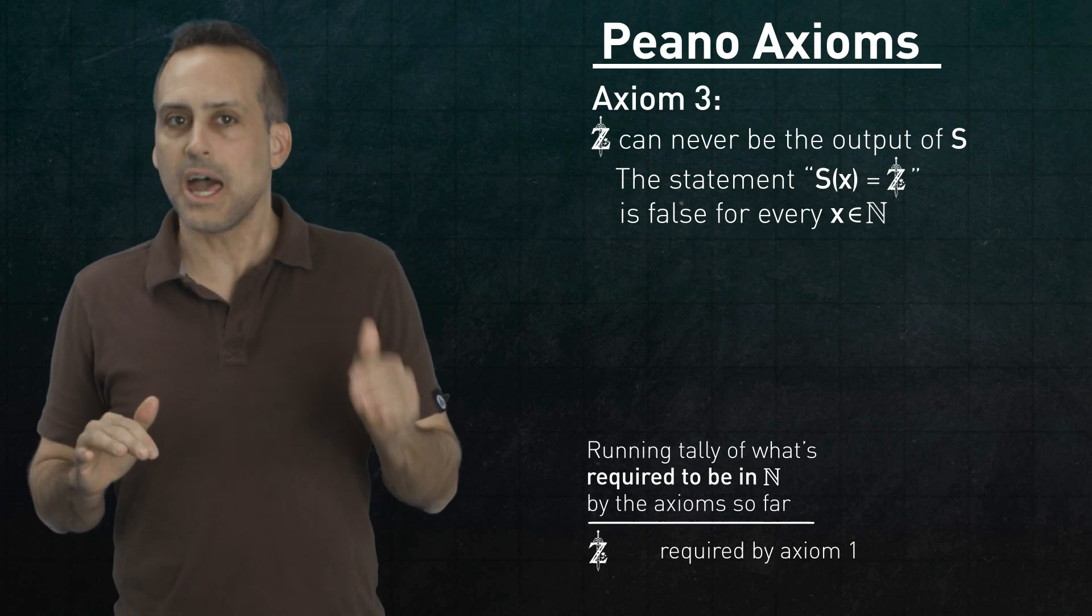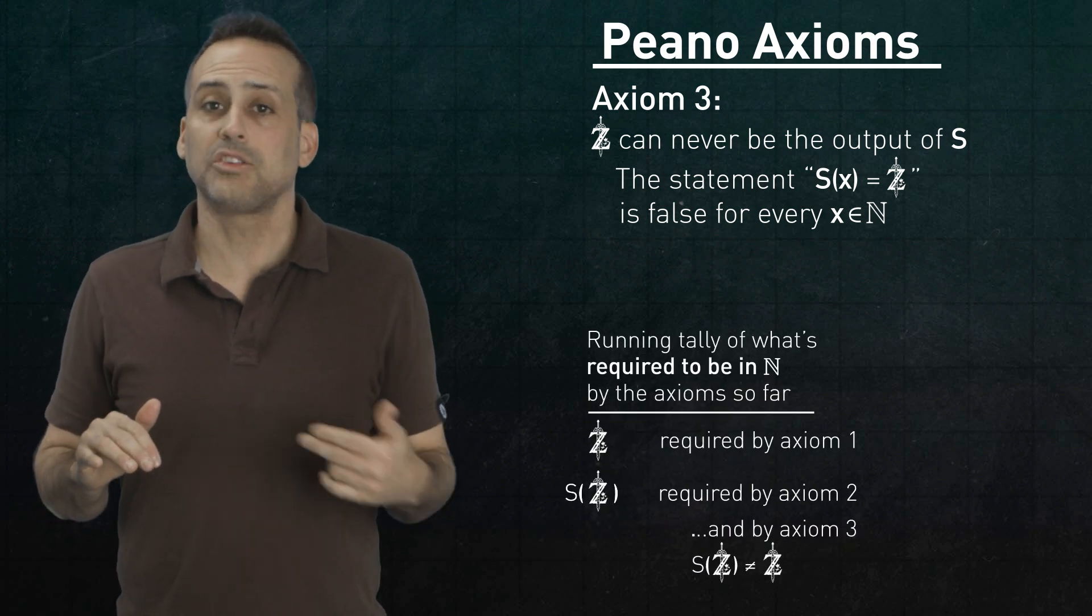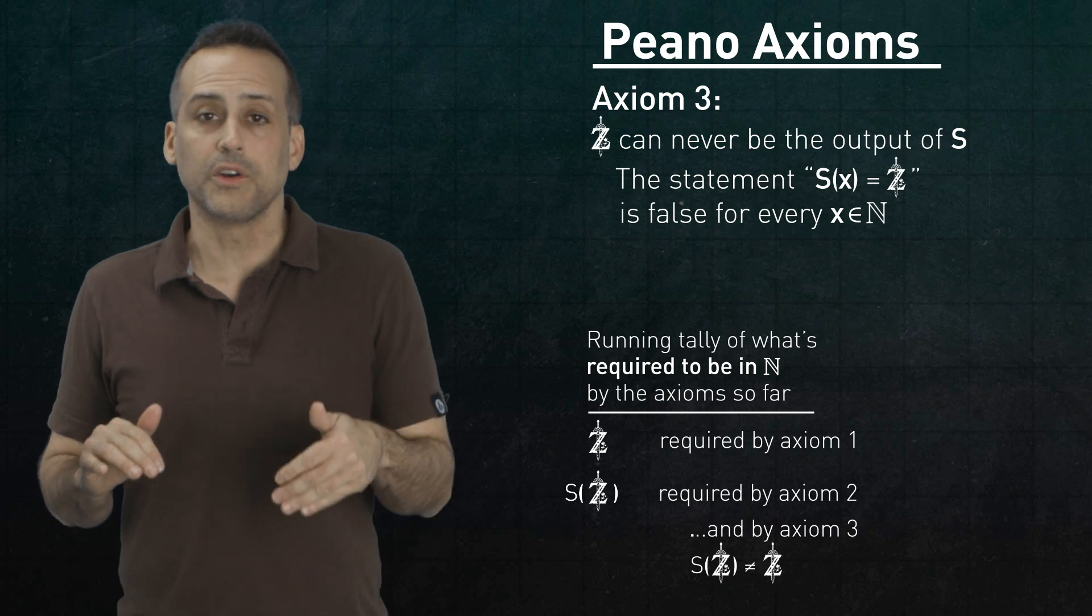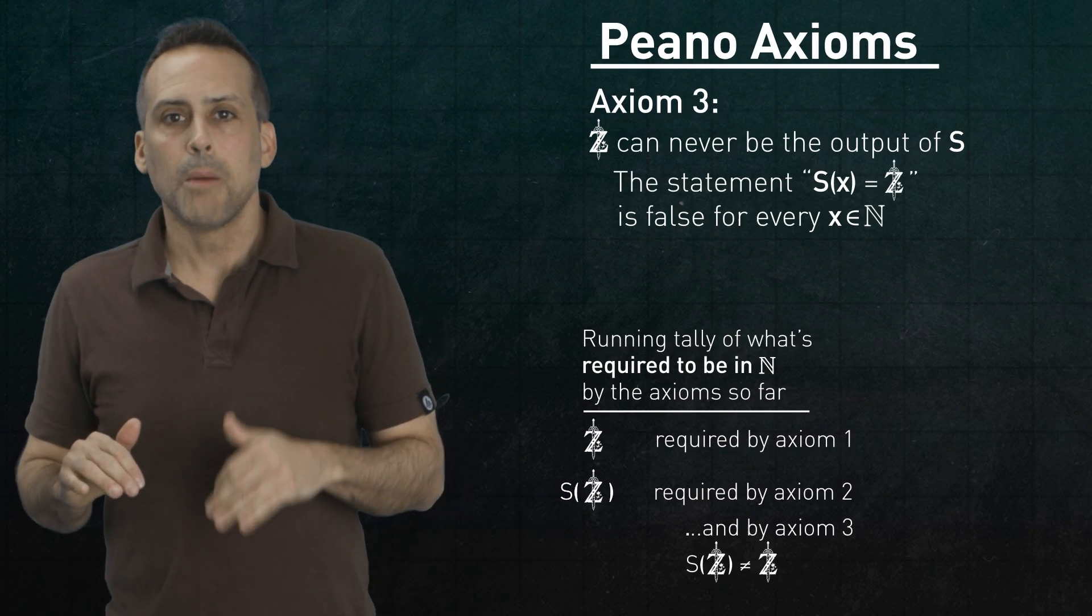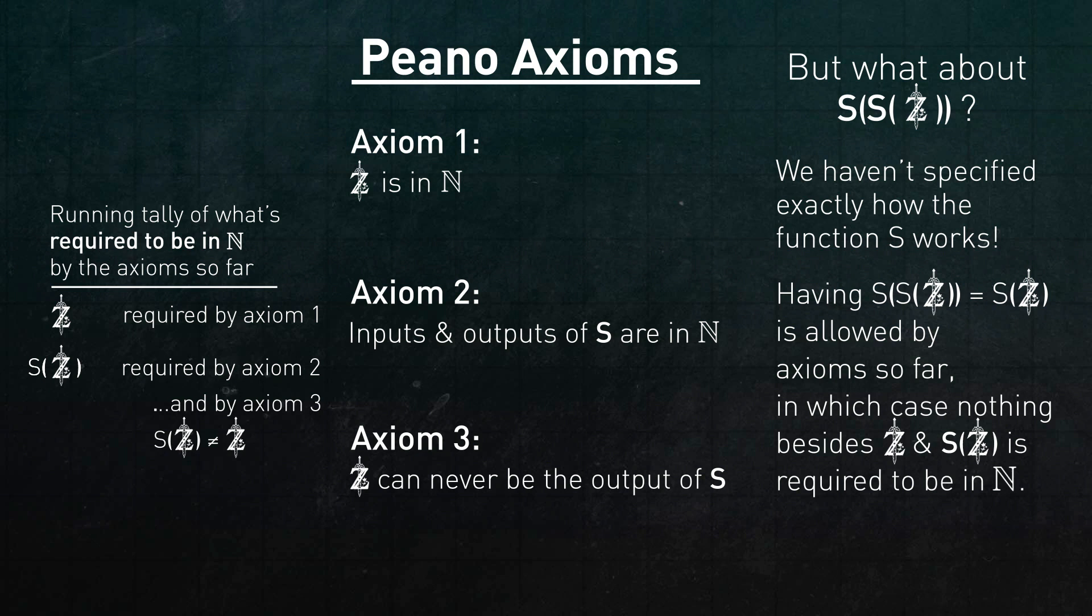Axiom 2 says that s of Zelda is in n. And axiom 3 says that s of Zelda is different from Zelda itself. But notice that having s of s of Zelda turn out to be s of Zelda would still be consistent with the axioms so far. And that would bring our building process to a halt. So we need to prevent that possibility.